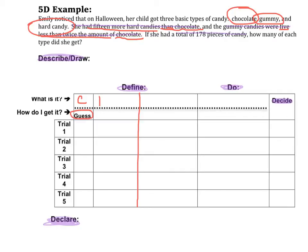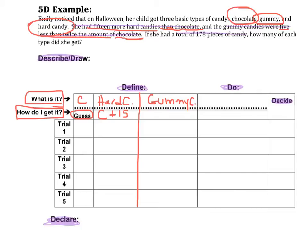I'm going to have hard candy and gummy candy as column headers, labeling what each is. For chocolate, I'm guessing — that's the only one I'm guessing. For hard candy, it tells us she had 15 more hard candies than chocolate, so I write C plus 15. That is how I will figure out how many hard candies. For gummy candy, it says five less than twice the amount of chocolate. Pay attention here: it says five less — that does not mean five minus. Five less means I'm actually subtracting five from something.